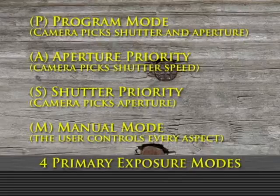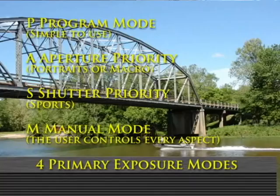Shutter priority is the opposite of aperture priority — you set a shutter speed and the camera picks the aperture. Manual mode is the hardcore stuff: you set both the shutter and the aperture yourself. You need to learn how to read the light meter before you can use it effectively. It's not for the faint of heart, but if you learn it, it'll make you ten times better as a photographer than relying on the camera to do the work for you.